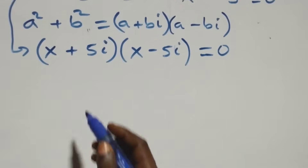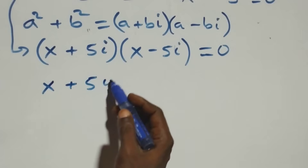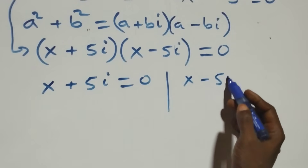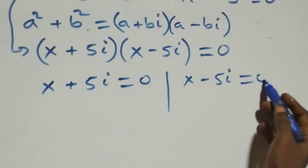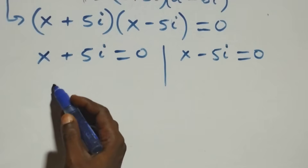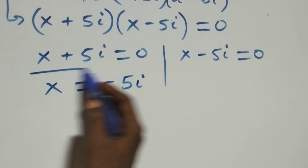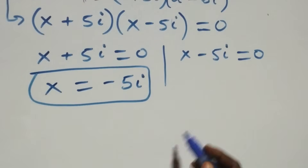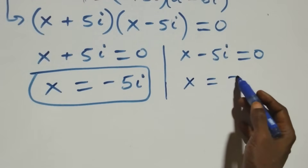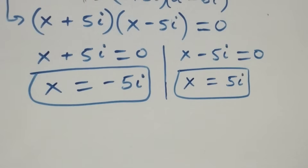We have two possible cases: x plus 5i equals zero, or x minus 5i equals zero. Solving these: x equals minus 5i, which is a complex solution, and x equals 5i, which is also a complex solution. So we have two complex solutions from here.